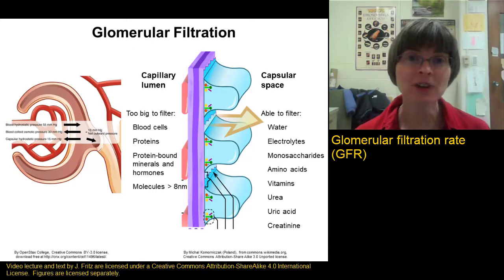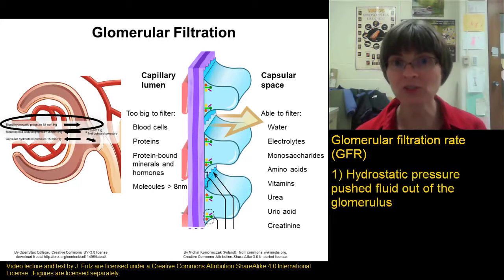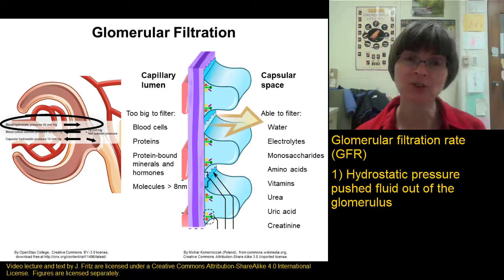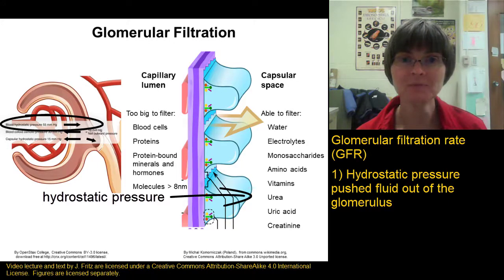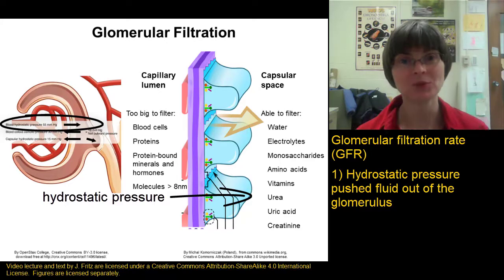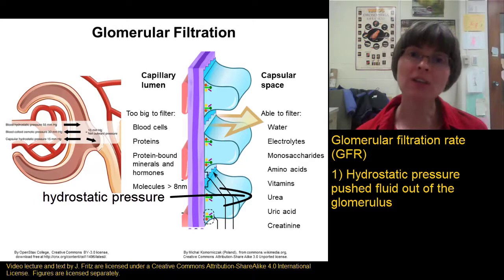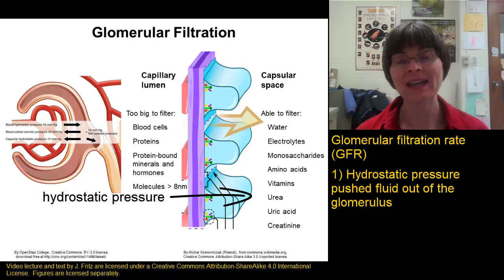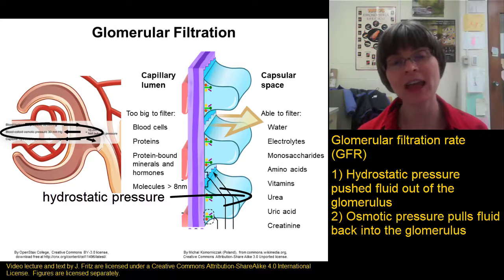The glomerular filtration rate is determined by a balance of three forces. The main one we've already discussed is hydrostatic pressure — the pressure of the blood in the glomerulus. The higher the hydrostatic pressure, or blood pressure in the glomerulus, the more fluid gets pushed out into the capsular space. The lower the blood pressure in the glomerulus, the less fluid gets pushed into the capsular space. While hydrostatic pressure is pushing out, we have other forces pulling back in — one of those is osmotic pressure.